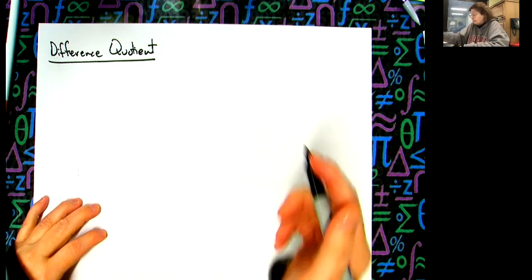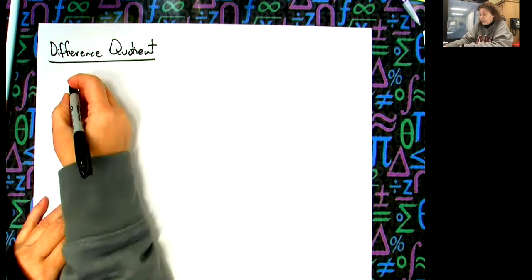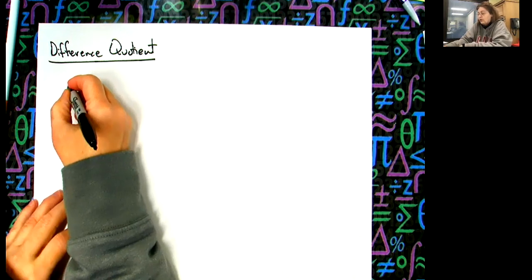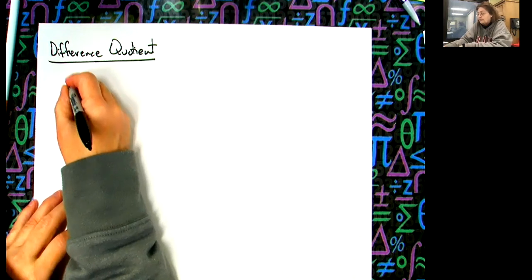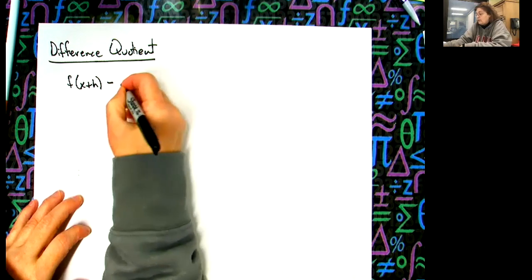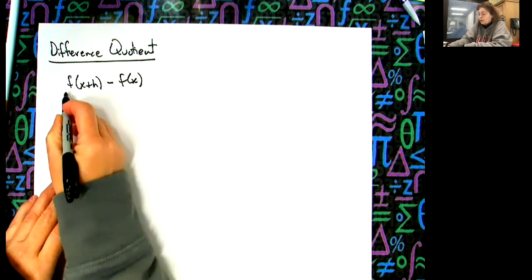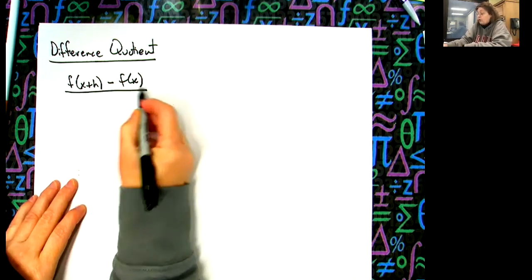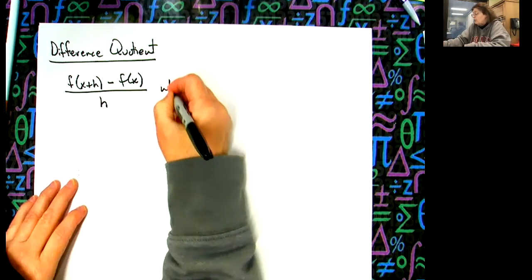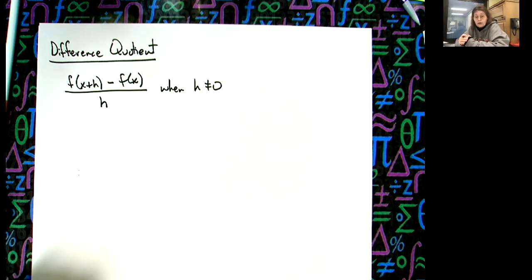So the formula for the difference quotient — your book is going to use f of x plus h minus f of x, all over h, when h does not equal zero.